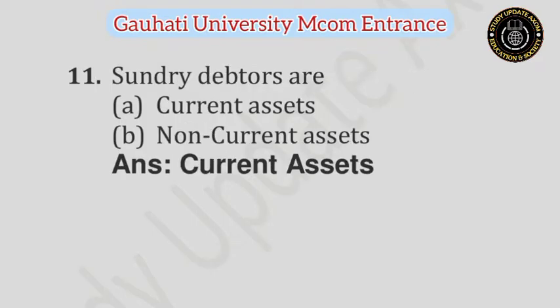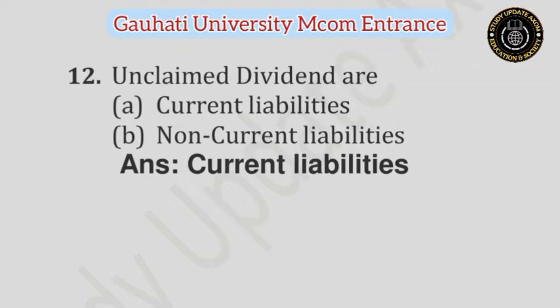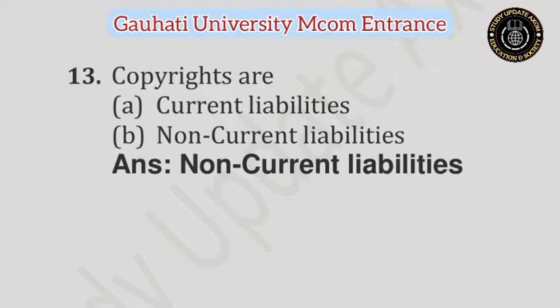Question number 11: Sundry debtors are — Option A: Current Assets, Option B: Non-Current Assets. Answer is Current Assets. Question number 12: Unclaimed dividends are — Option A: Current Liabilities, Option B: Non-Current Liabilities. Answer is Current Liabilities. Question number 13: Copyrights are — Option A: Current Liabilities, Option B: Non-Current Liabilities. Answer is Non-Current Liabilities.